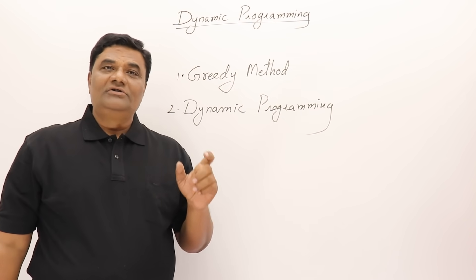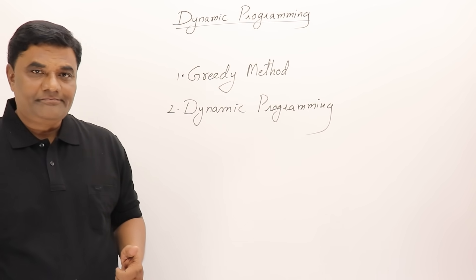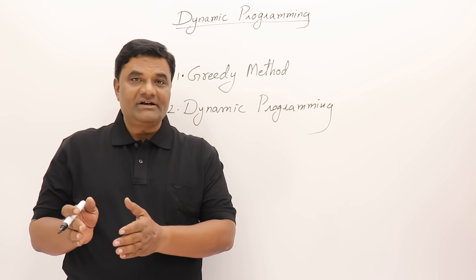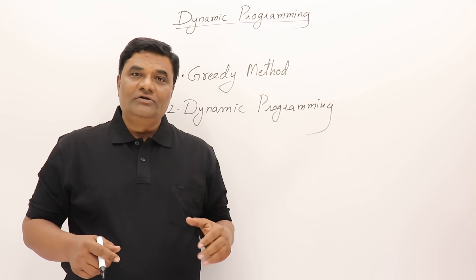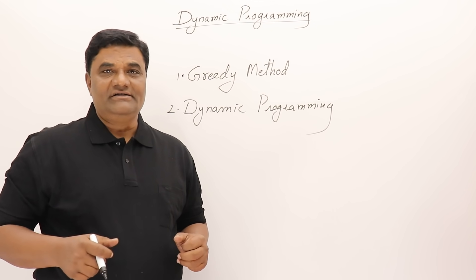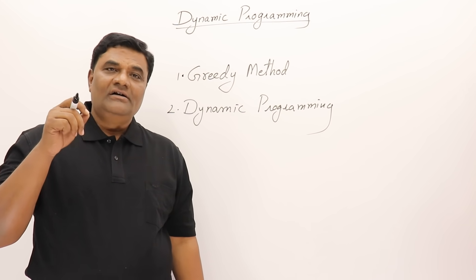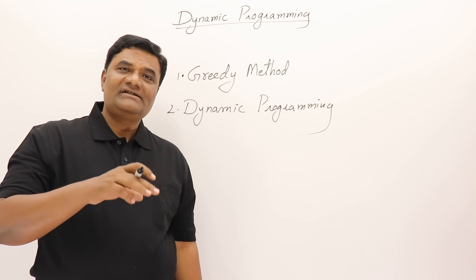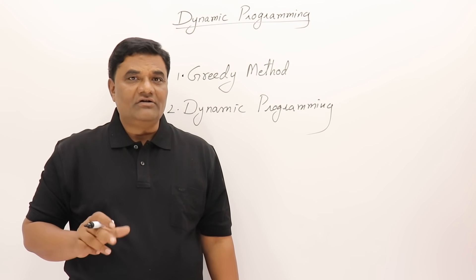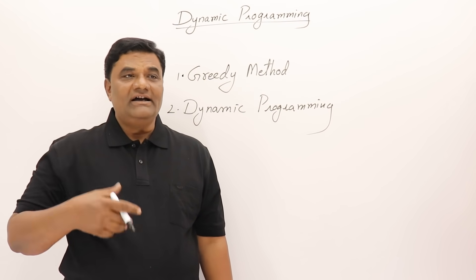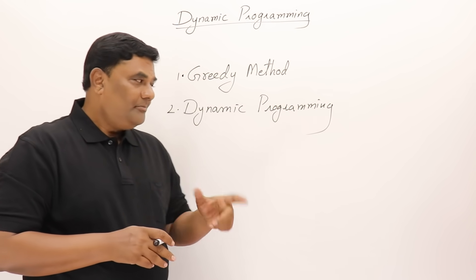Greedy method and dynamic programming are both used for solving optimization problems. Both are different strategies but the purpose is the same. Optimization problems require either a minimum or maximum result. In greedy method we follow a predefined procedure to get the optimal result — like Kruskal's method always selecting the minimum cost edge, or Dijkstra's shortest path algorithm always selecting the shortest path vertex and relaxing the vertices.